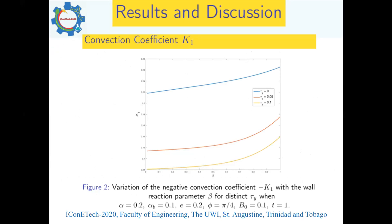Figure two shows variation of the negative convection coefficient K_1 with the wall reaction parameter beta for different values of tau_y, with other parameters fixed. We confirm here that the convection coefficient decreases with an increase in the yield stress tau_y.